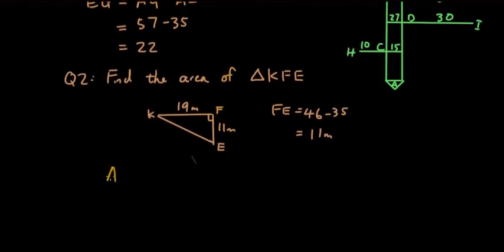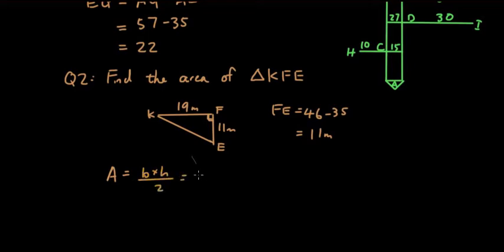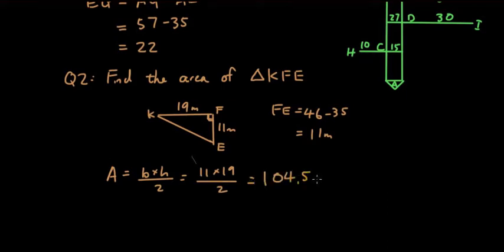The area is base times perpendicular height divided by 2, since there's a right angle. So that's 11 times 19 divided by 2, and the answer is 104.5 meters squared.